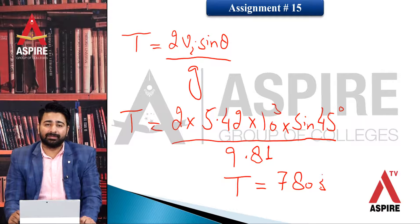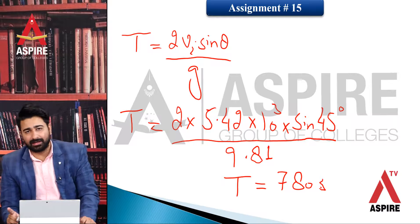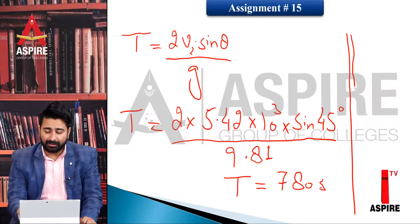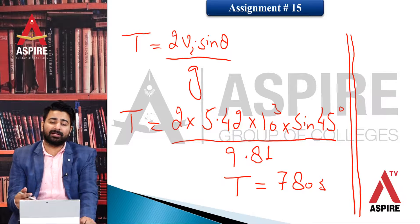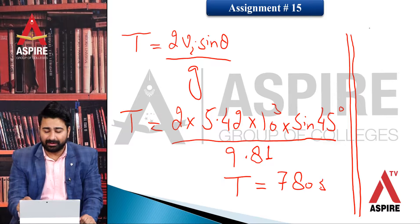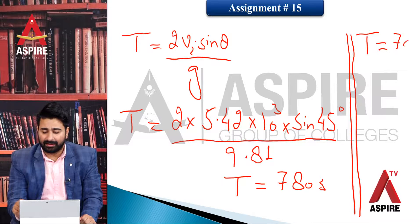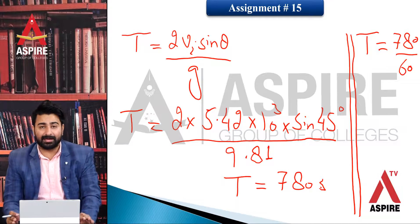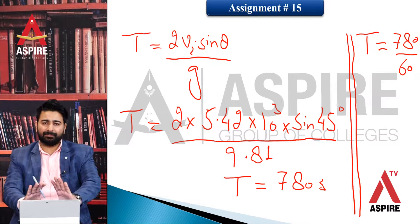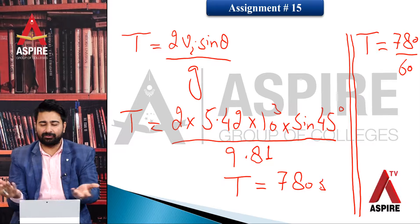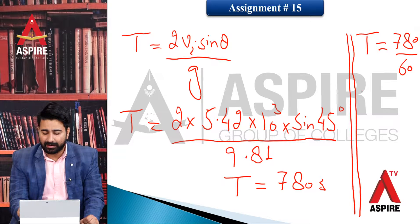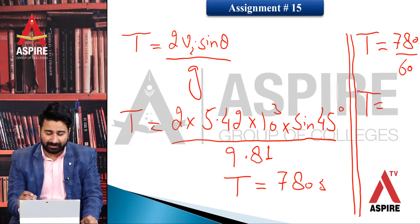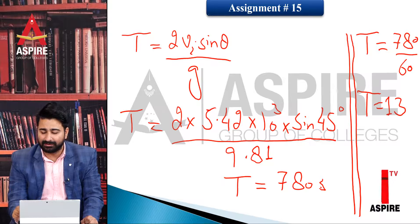اس ballistic missile کو زمین سے launch ہو کر دوبارہ ground تک پہنچنے میں 780 seconds لگیں گے۔ 780 seconds کو minutes میں convert کرنے کے لیے 60 پر divide کریں، کیونکہ ایک minute میں 60 seconds ہوتے ہیں۔ 780 ÷ 60 = 13 minutes۔ تو اس کا مطلب flight کا وقت 13 منٹ ہوگا۔